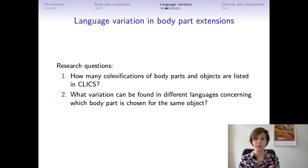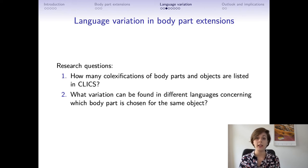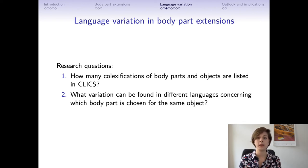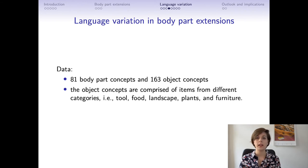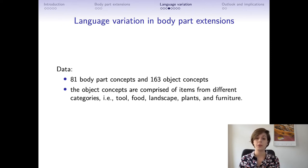The research question I'm addressing today is: how many colexifications between body parts and object features can we find in CLIX, and what variation can we find across languages concerning which body part is chosen for the same object? The data I included consists of a list of 81 body part concepts and 163 object concepts. The object concepts include items from different categories: tools, food, landscape, plants, and furniture.